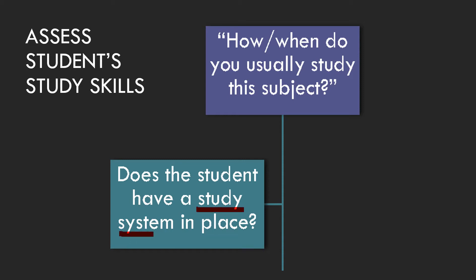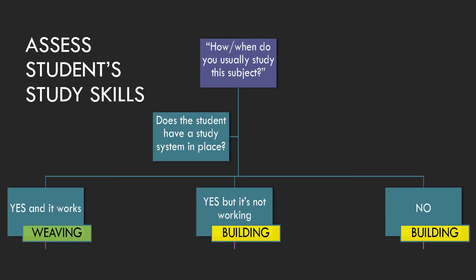A study system means they have a system together — they know how to take notes, they have designated times, and they don't have a problem fitting in time to study outside of class and outside of the tutoring session. There are three options — three answers you could give depending on whether or not the student has a study system in place.